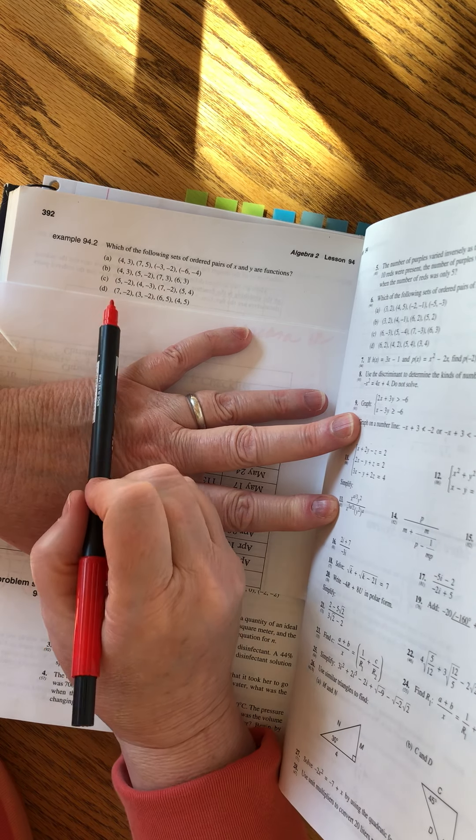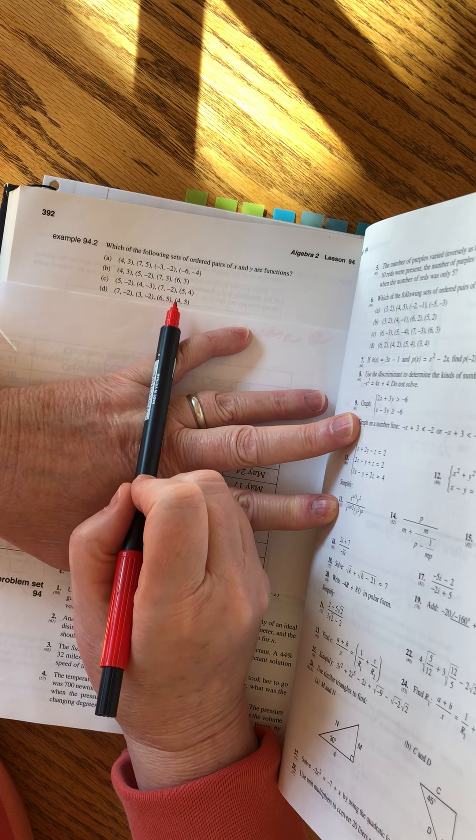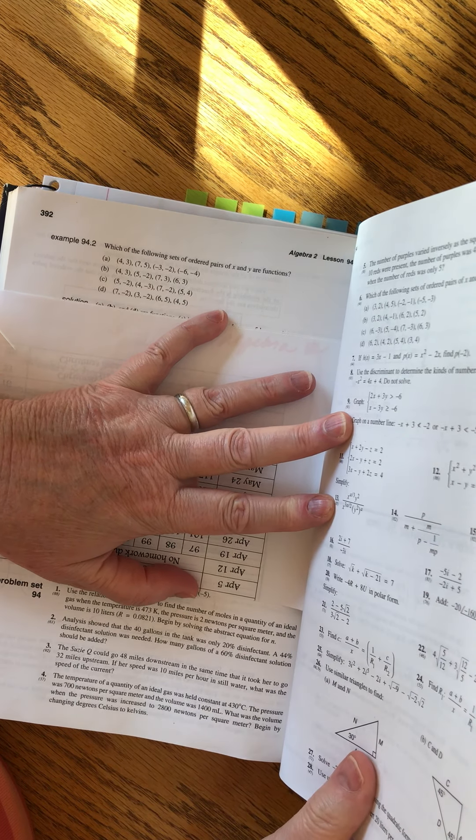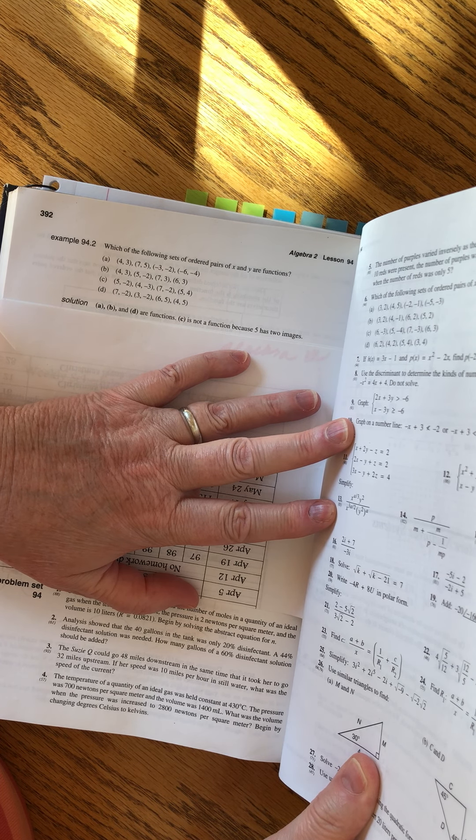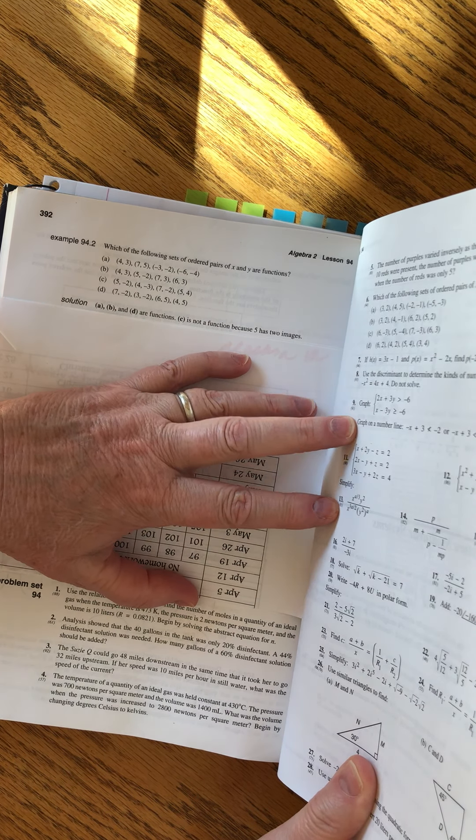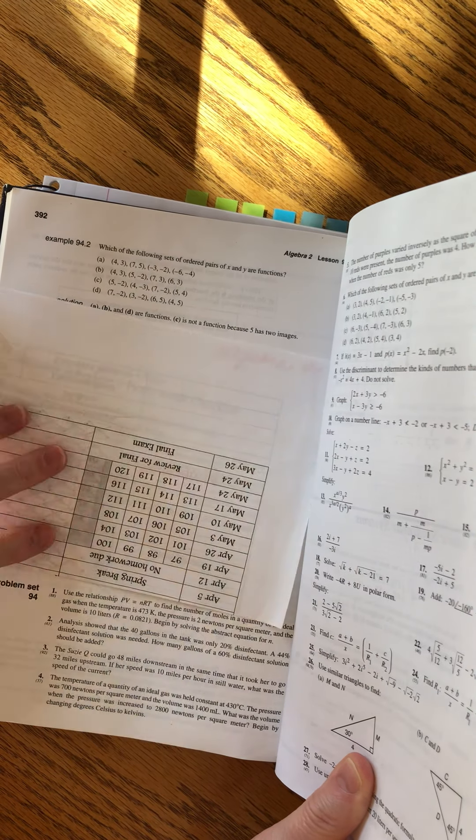And then what about D? Seven, three, six, four. That one is a function. A, B, and D are functions. C is not, because five has two images. Yay! We nailed it. And that's the basic information about what functions are and how we can examine them and how we can tell if they're actually legitimate functions or not.